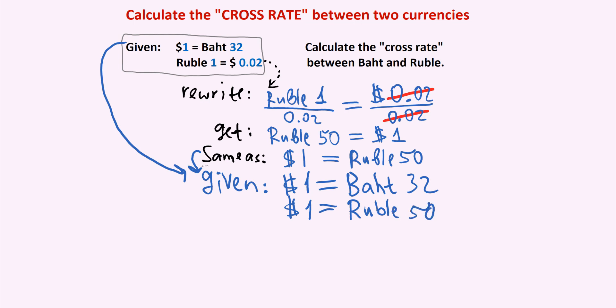So this is what is now given to us. We kind of rewrote it so that it's easier to work with these numbers. And just like in my first example, in my other video, because both 32 baht and 50 rubles equal $1, we can set these two amounts equal to each other.